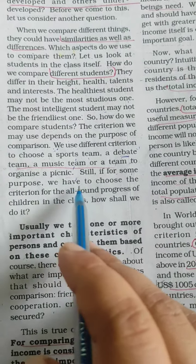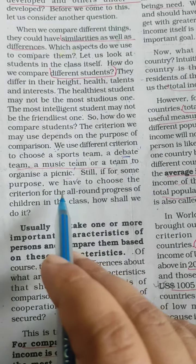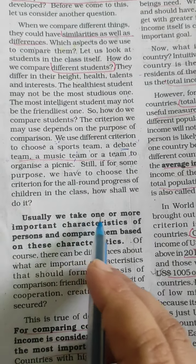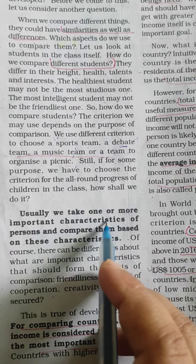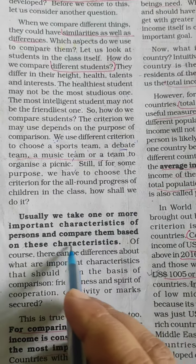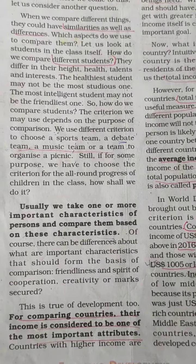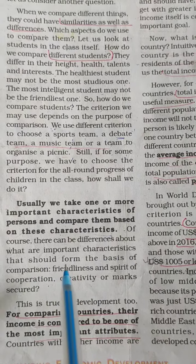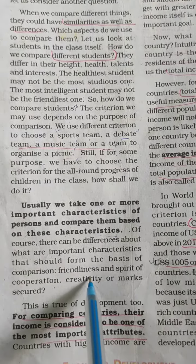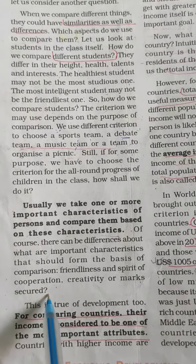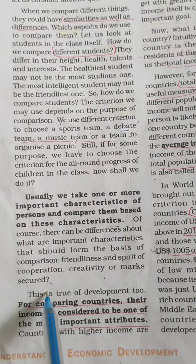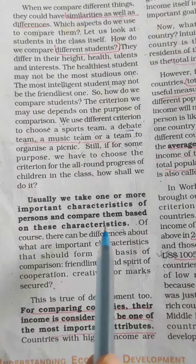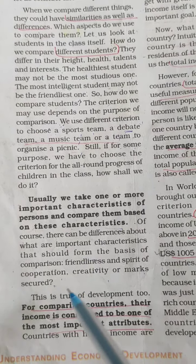Still, if for some purpose we have to choose criteria for all-round progress of children in class, how shall we do it? Usually, we take one or more important characteristics of persons and compare them based on these characteristics. Of course, there can be differences about what are important characteristics — friendliness and spirit of cooperation, creativity, or marks and skill. It is not easy to compare students because different students have their own ability in different fields.